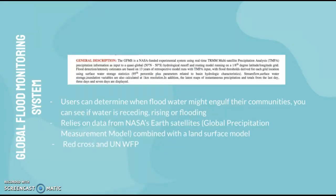An example of flood prediction is the Global Flood Monitoring System. According to NASA, it is a NASA-funded experimental system using real-time multi-satellite precipitation analysis as input to quasi-global hydrological runoff and routing — essentially using satellites to predict flood events.